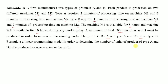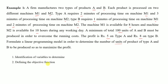We have to determine the number of units of product type A and B to be produced so as to maximize the profit. This is a real-life optimization problem. To convert it into a linear programming problem, we remember three steps: first, identification of variables; second, defining the objective function — which is either minimize or maximize, here maximize the profit; third, defining the constraints — the limitations under which we have to work.